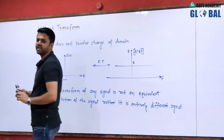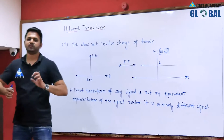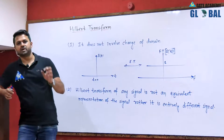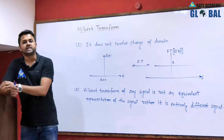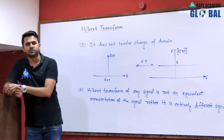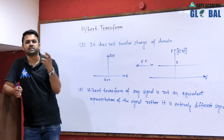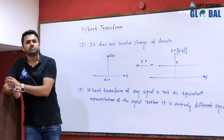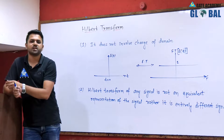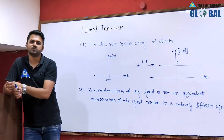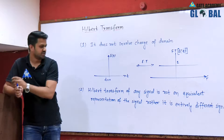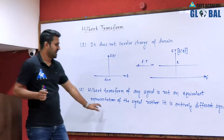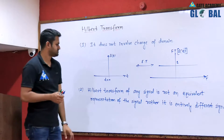Whenever we take the Fourier transform, Laplace transform, or Z transform, it is the equivalent representation of the signal in another domain. But when we take the Hilbert transform, since the domain does not change, the signal changes completely — so it is entirely a different signal.